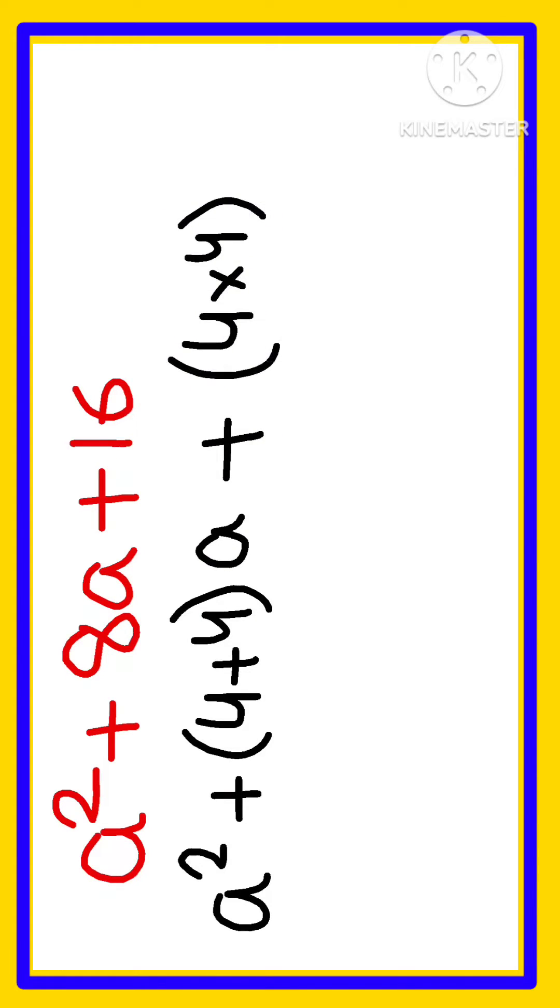If we can write the coefficient of variable a as the sum of two numbers - here 4 + 4 - and when we multiply these two numbers, 4 × 4, we get 16, then we can write the expression in factored form.